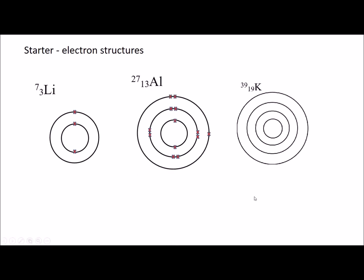And for potassium, once again two in the first shell, eight in the second shell, eight in the third shell, and one in the last outer shell. You can see that lithium and potassium both have one electron in the outer shells, so that means they are in group one. Aluminium has three electrons in the outer shell, so it must be in group three.